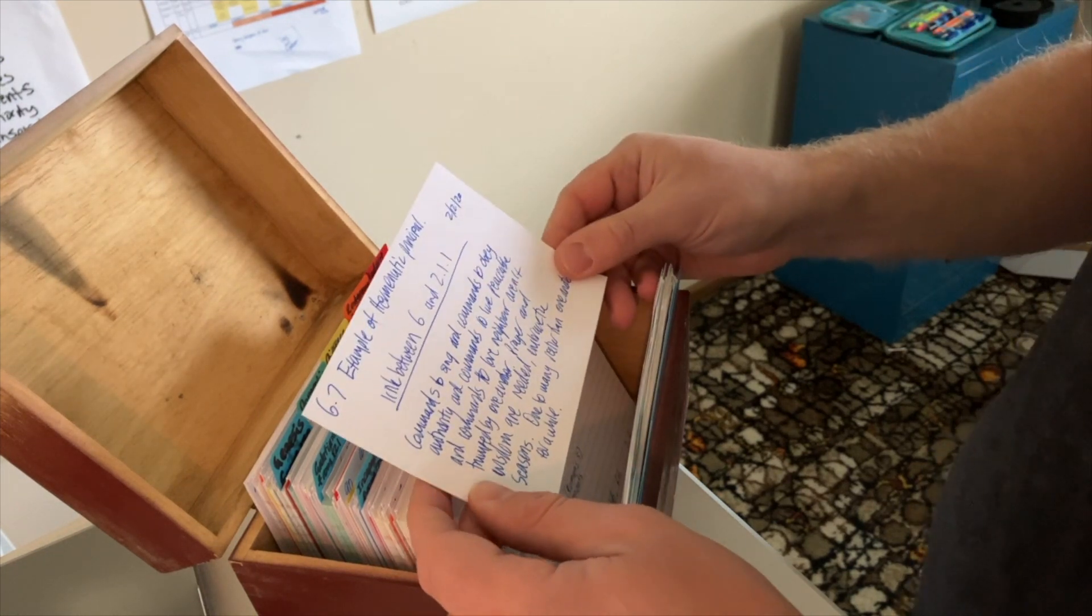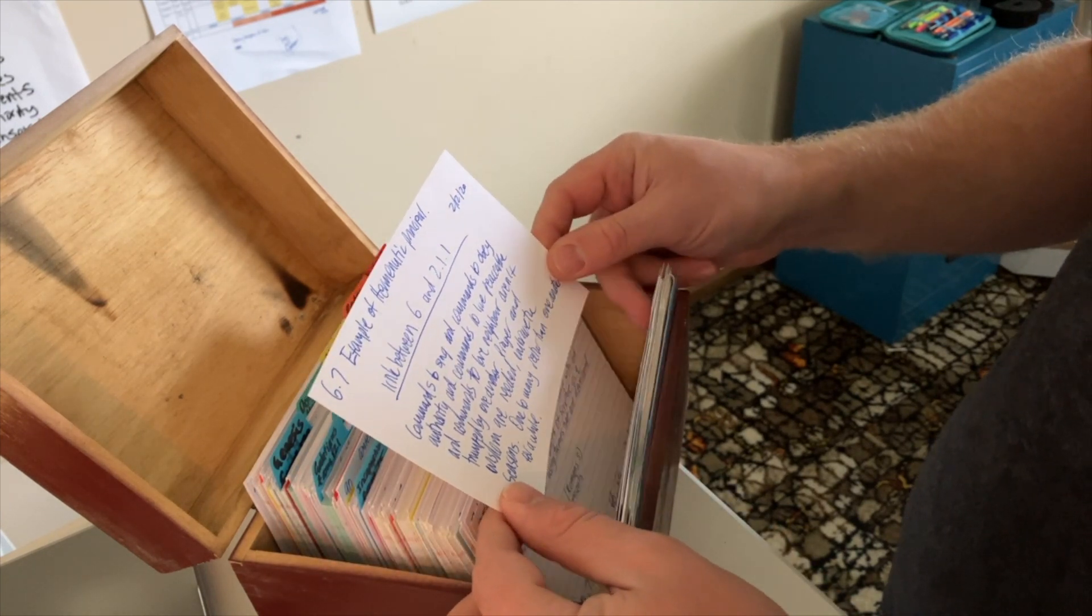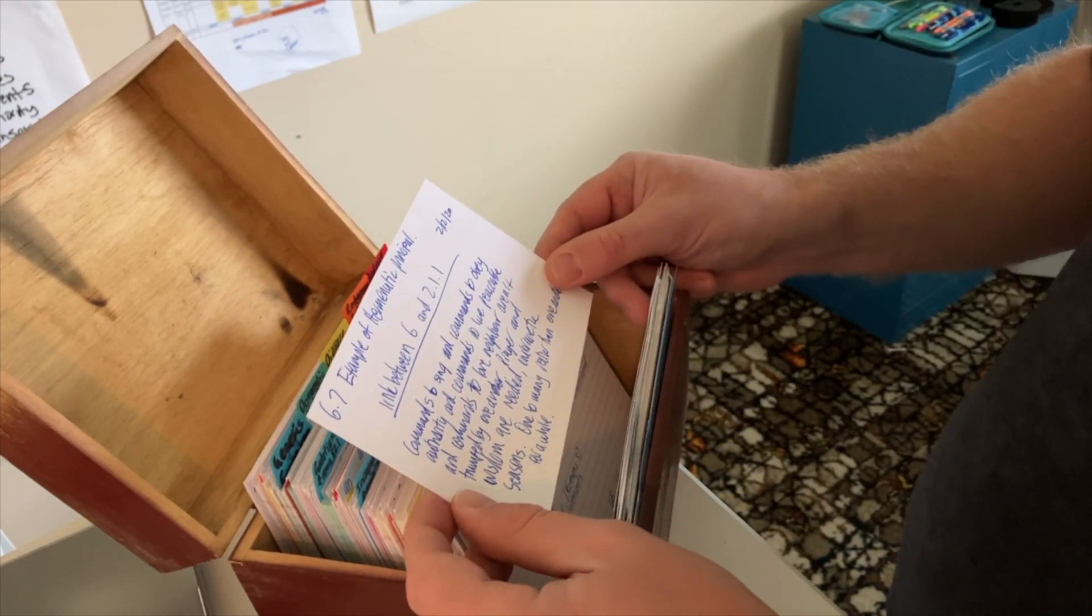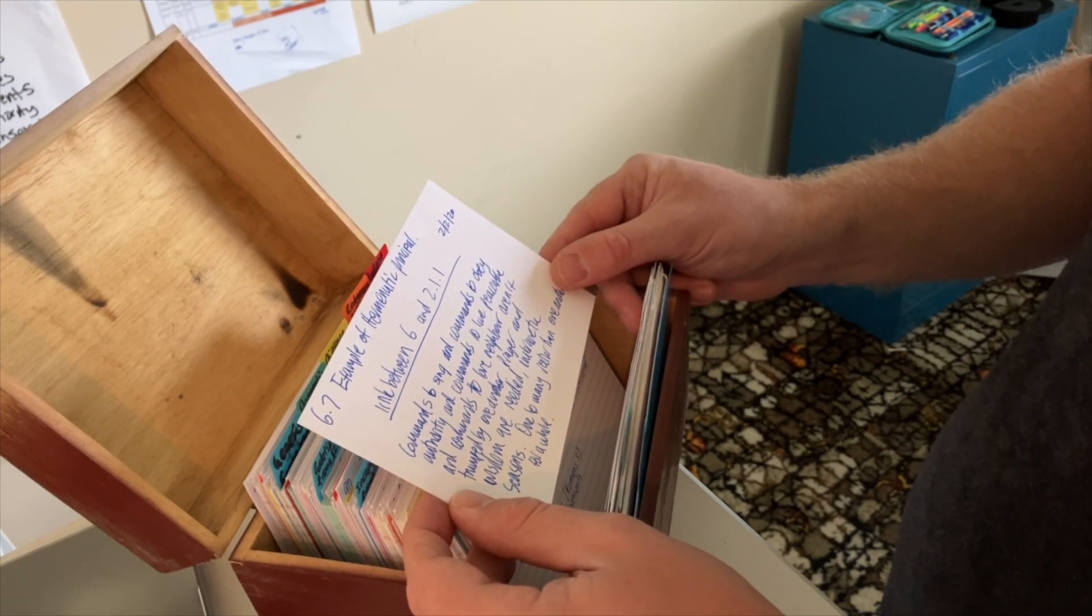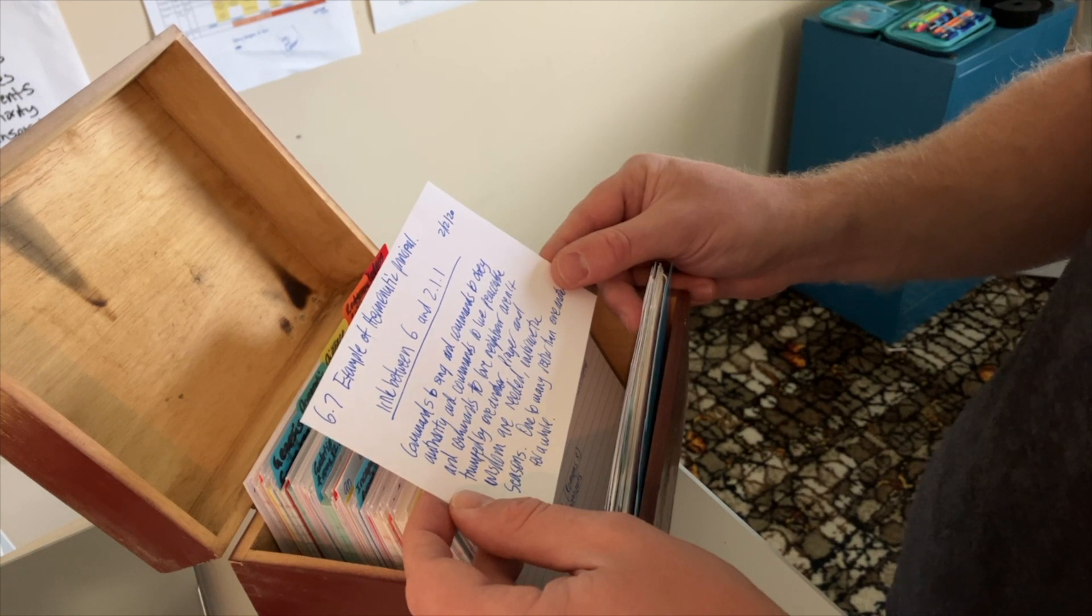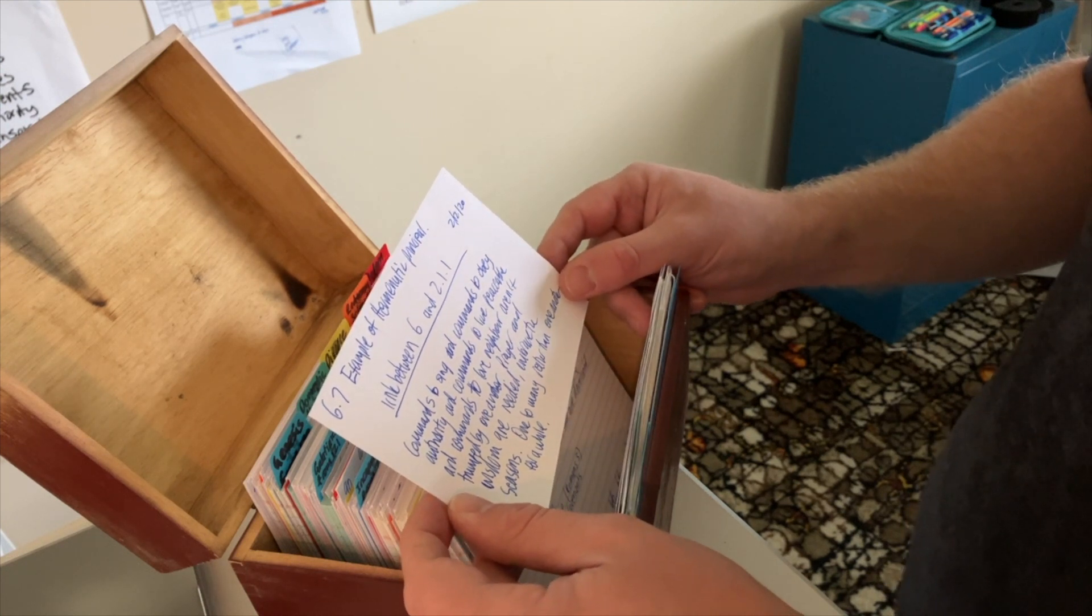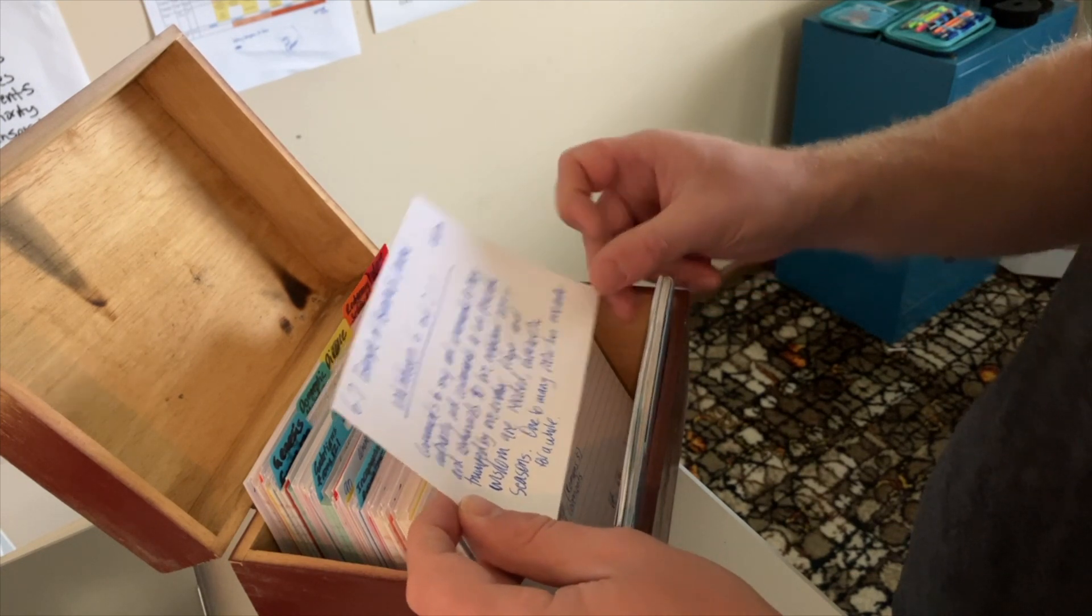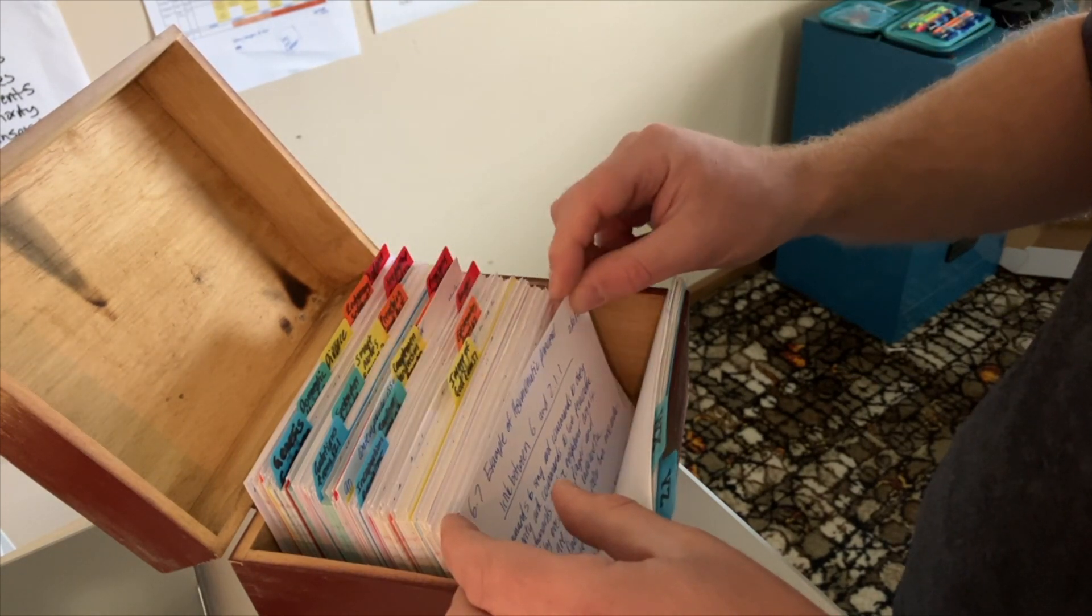I'm going to go to card 6.7. This is a linking card. It's a link between card 6 and 2.1.1 which I just read. Example of a hermeneutic principle. Commands to sing and commands to obey authority and commands to live peaceably and commands to love your neighbour aren't trumped by one another. Prayer and wisdom are needed. Embrace the seasons. One to many rather than one another for a while. I was thinking through what it would look like to have church online. As it was we ended up on Zoom. It was really great.